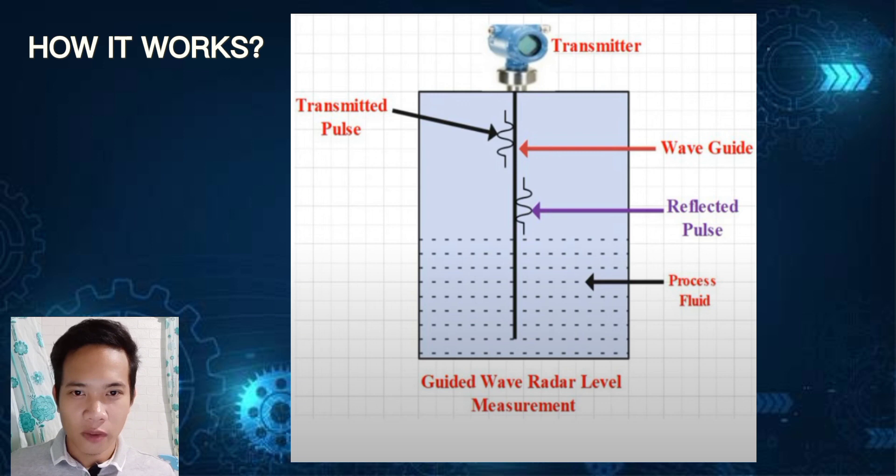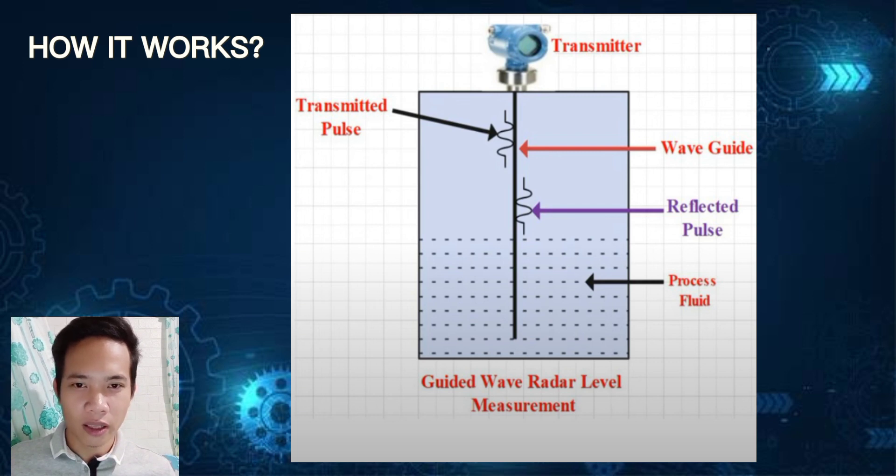The time it takes for the signal to return is measured. The sensor measures the time delay between sending the signal and receiving the reflected signal. Using the known speed of light in the waveguide probe, which is constant, the sensor calculates the distance from probe tip to the material surface.